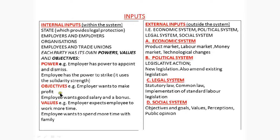Objectives: the employer wants to make profit all the time and will only focus on the profit. On the other hand, the employee wants a good salary and bonuses. So you can see that the internal inputs contradict in nature. In terms of values, the employer expects the employee to work more time, while on the other hand the employee wants to spend more time with the family. This input will have a feedback loop — a reflection to the labor relations system of any country.